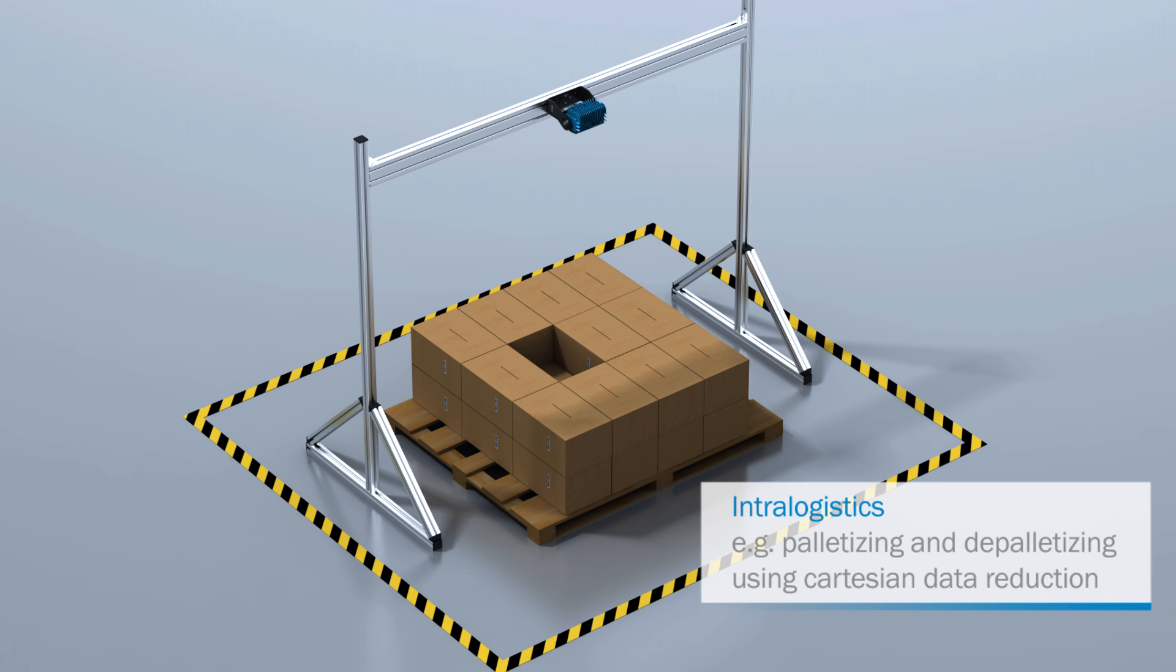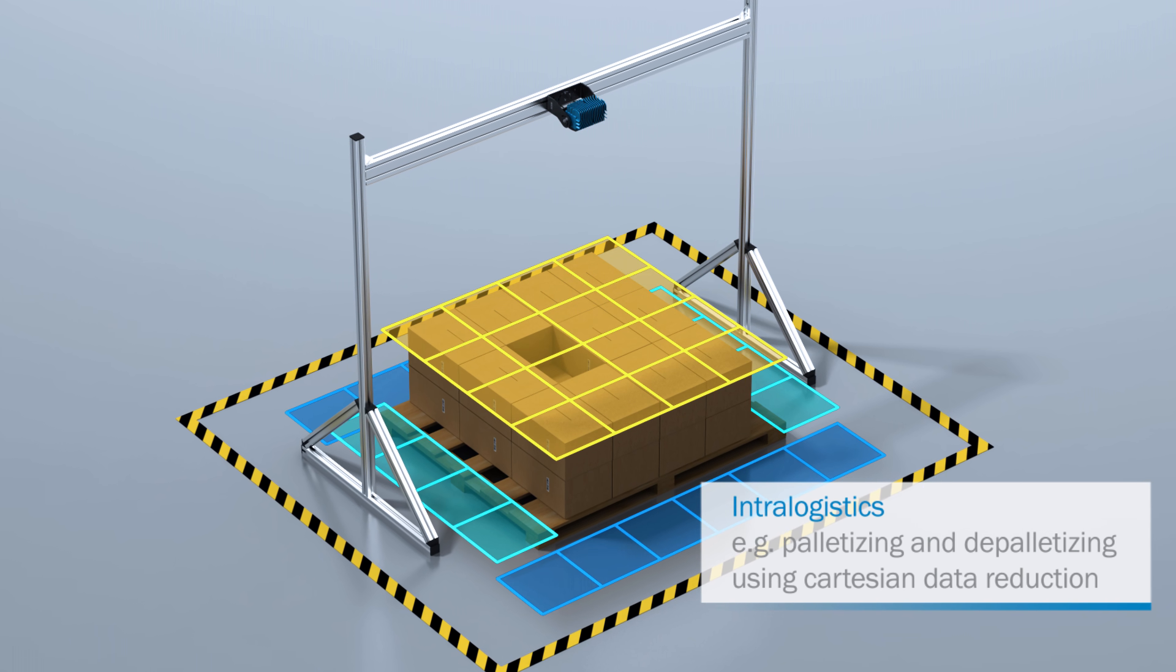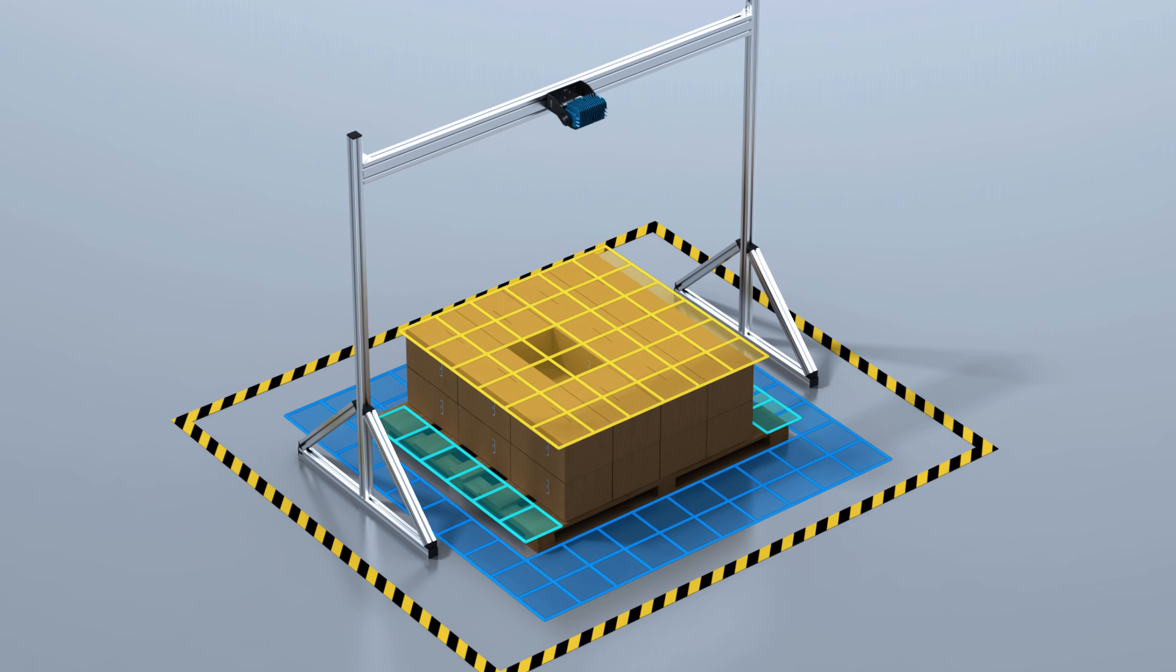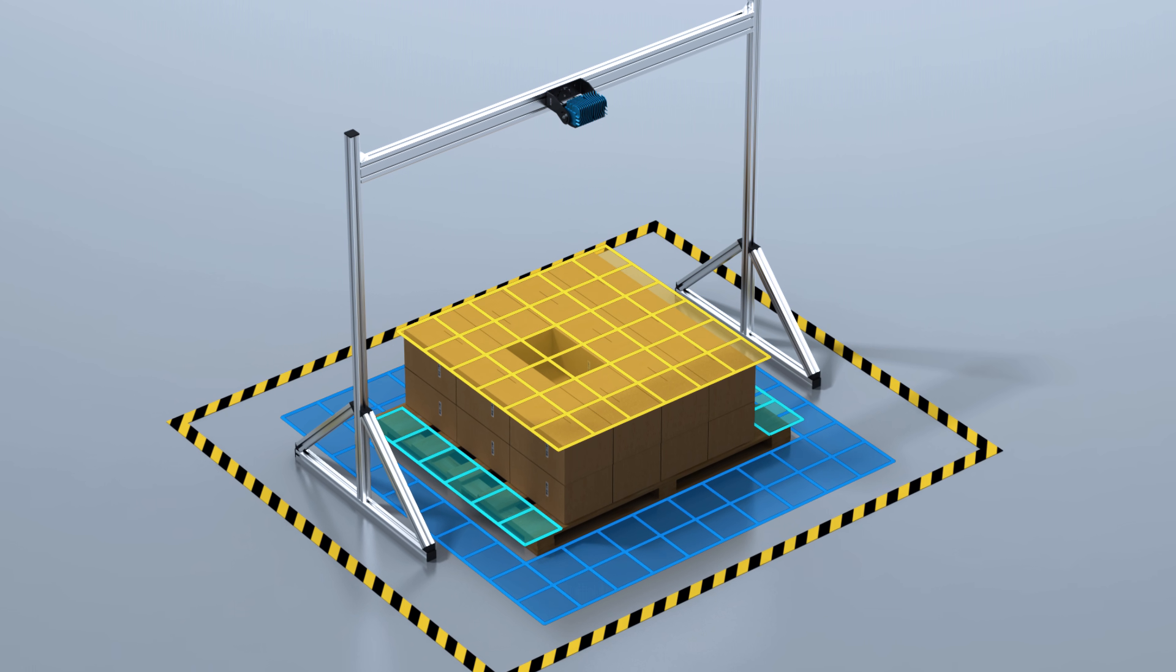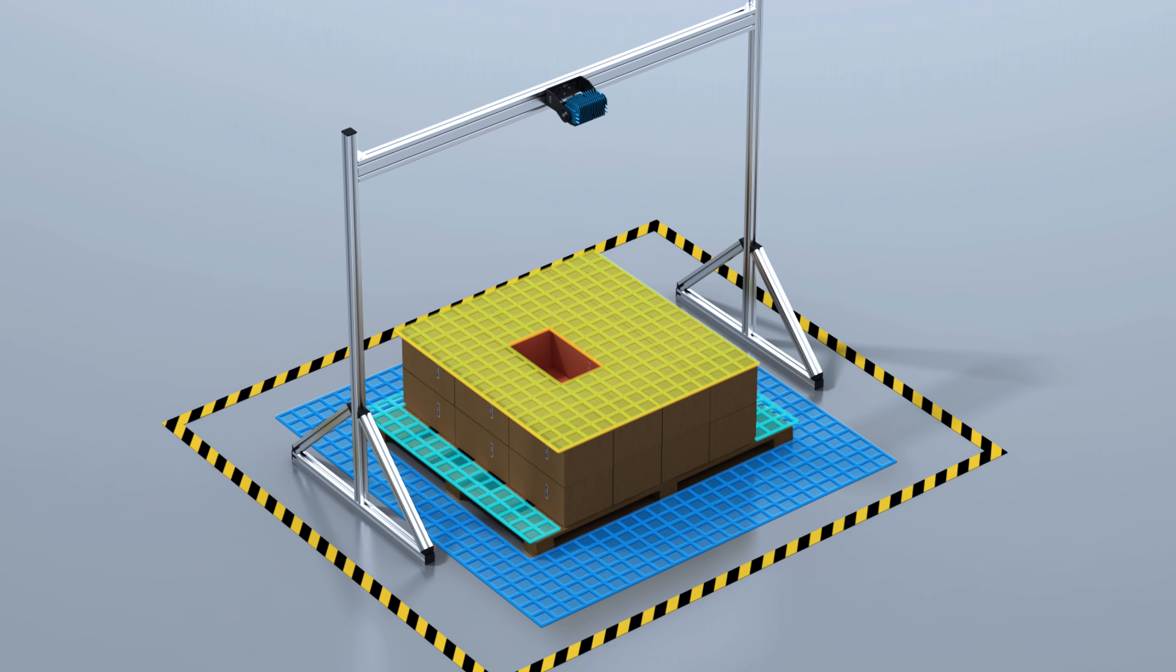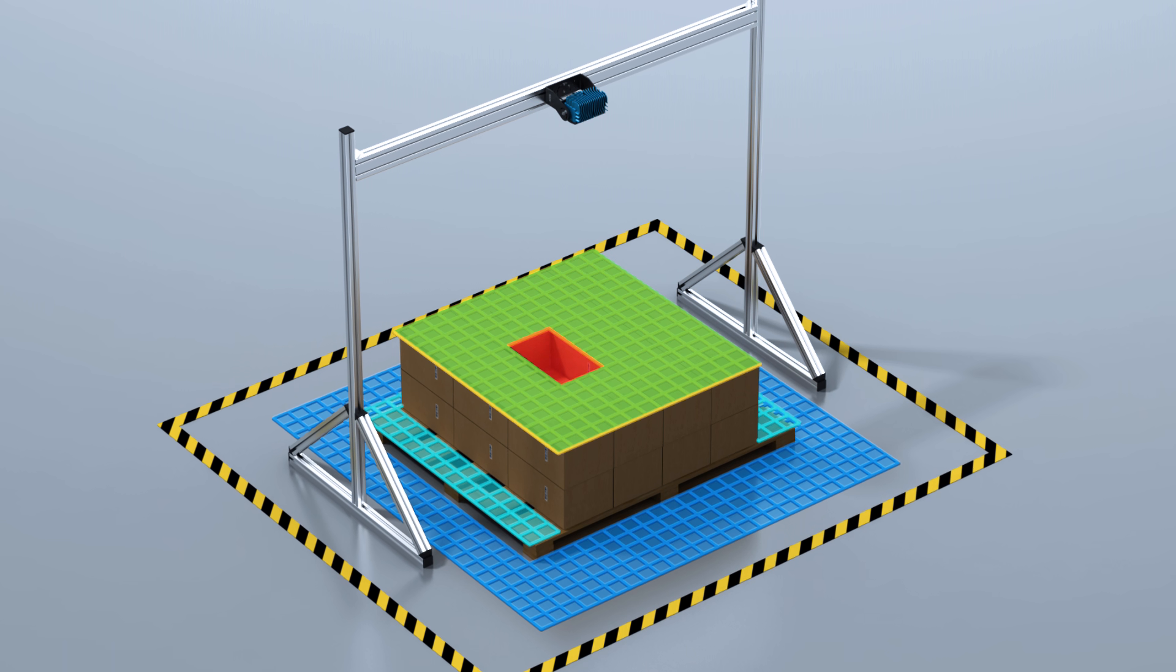Again, the data reduction offered by Visionary T AGVs can greatly facilitate the application. Once adjusted to the specific task, incomplete pallet layers and missing objects can easily be detected.